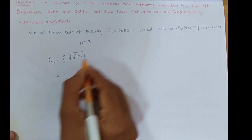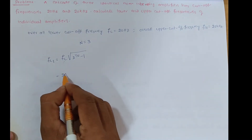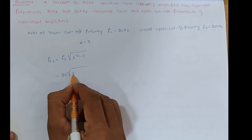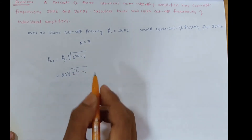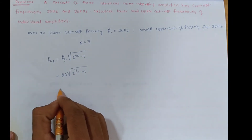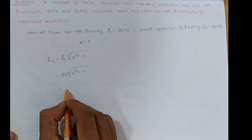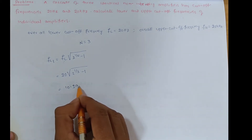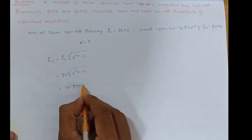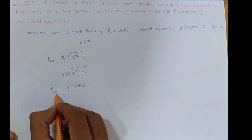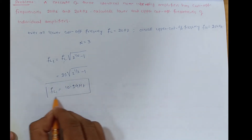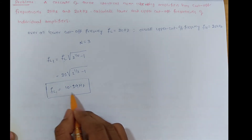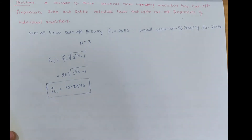Substituting n = 3 and FL = 20 Hz: FL1 = 20 × √(2^(1/3) − 1). We get approximately 10.19 Hz. So the individual amplifier lower cutoff frequency is 10.19 Hz.